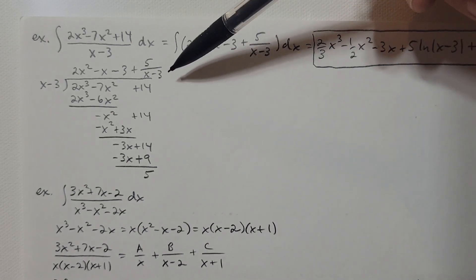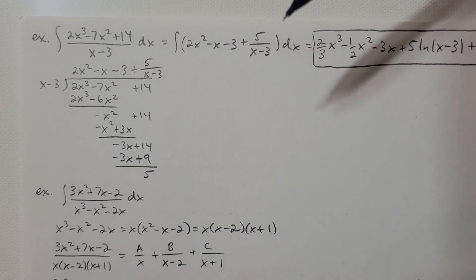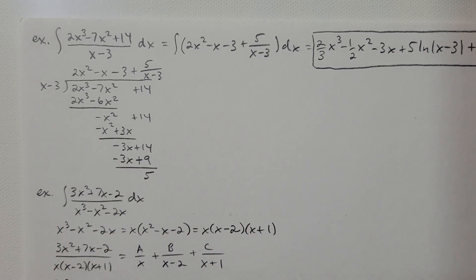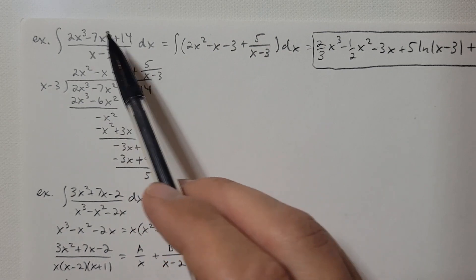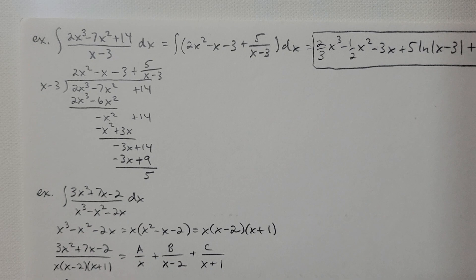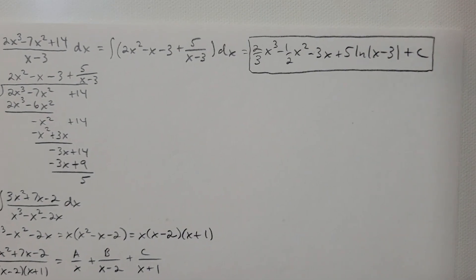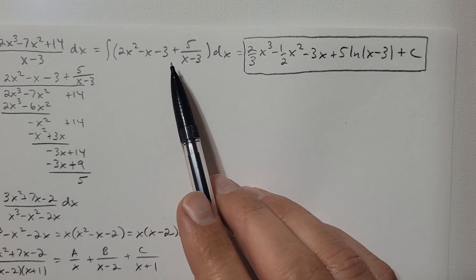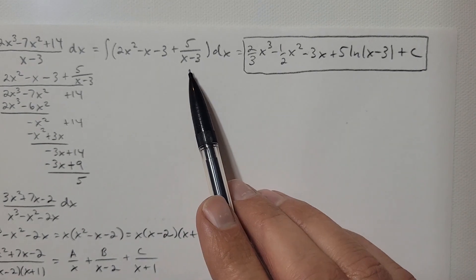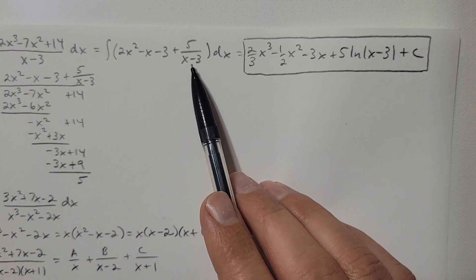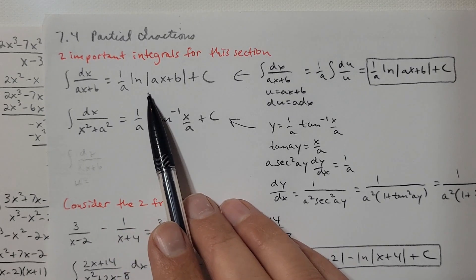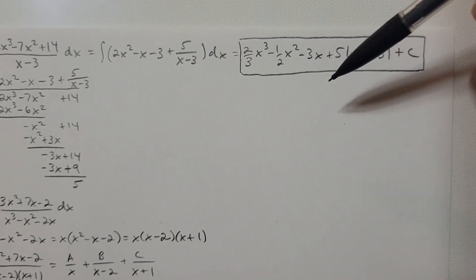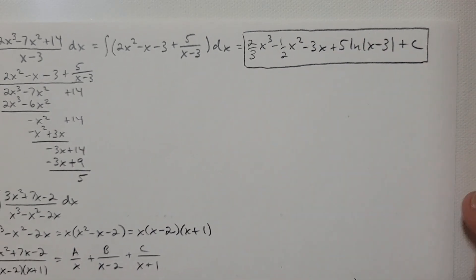The leftover information is going to be a fraction added to the quotient — you're always adding the leftover. So it's going to be 5 divided by x minus 3; you're always dividing by the expression that's outside. When I divide this out, I can go right to the answer. The answer is 2x cubed over 3 minus one-half x squared minus 3x plus 5 times the ln of the absolute value of x minus 3, plus the constant. You'll almost always need an ln expression in the answer for these.